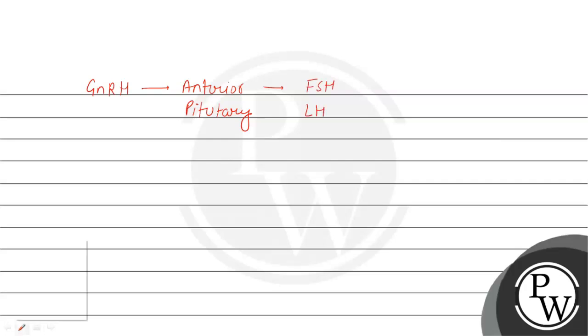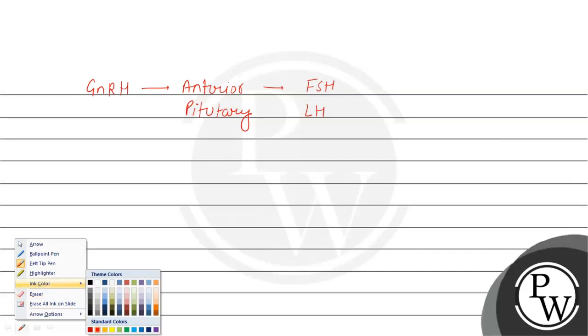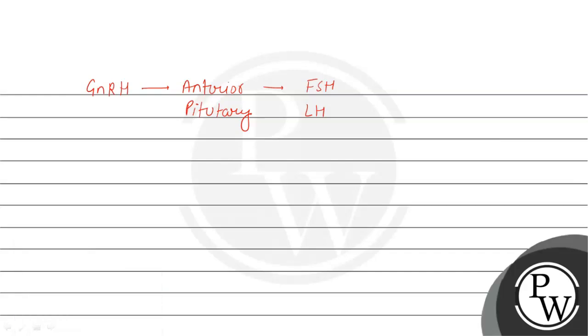These two hormones will be released: follicle stimulating hormone and LH. These are very helpful in reproduction. Reproduction is very important in males and females and is very essential.